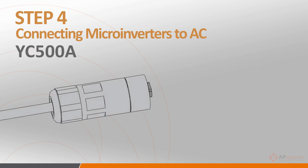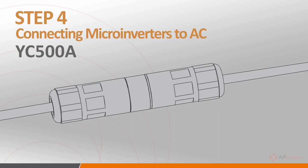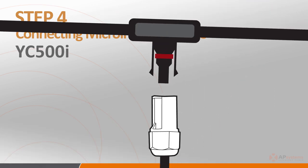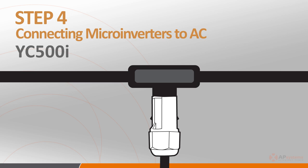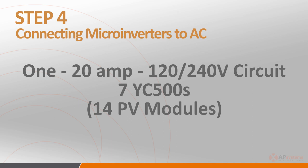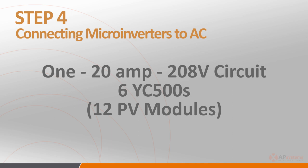Plug the female AC connector of the first inverter to the male connector of the next one, and so on, twisting the locking tab until you hear an audible click. For the YC500I, plug the AC female connector from the microinverter into the male connector on the trunk cable. When doing so, remember the branch inverter limits: the maximum number of units per 120-240 volt 20 amp circuit is 7, or a total of 14 PV modules, and the maximum number of units per a 208 volt 20 amp circuit is 6, or a total of 12 PV modules.